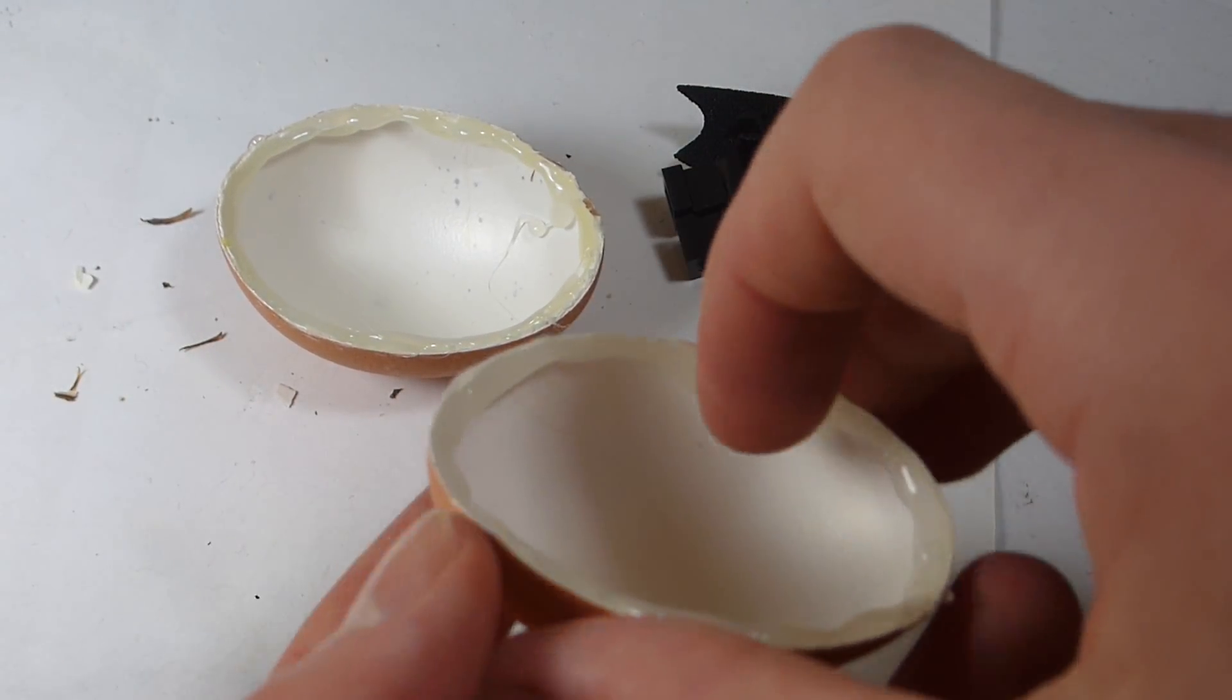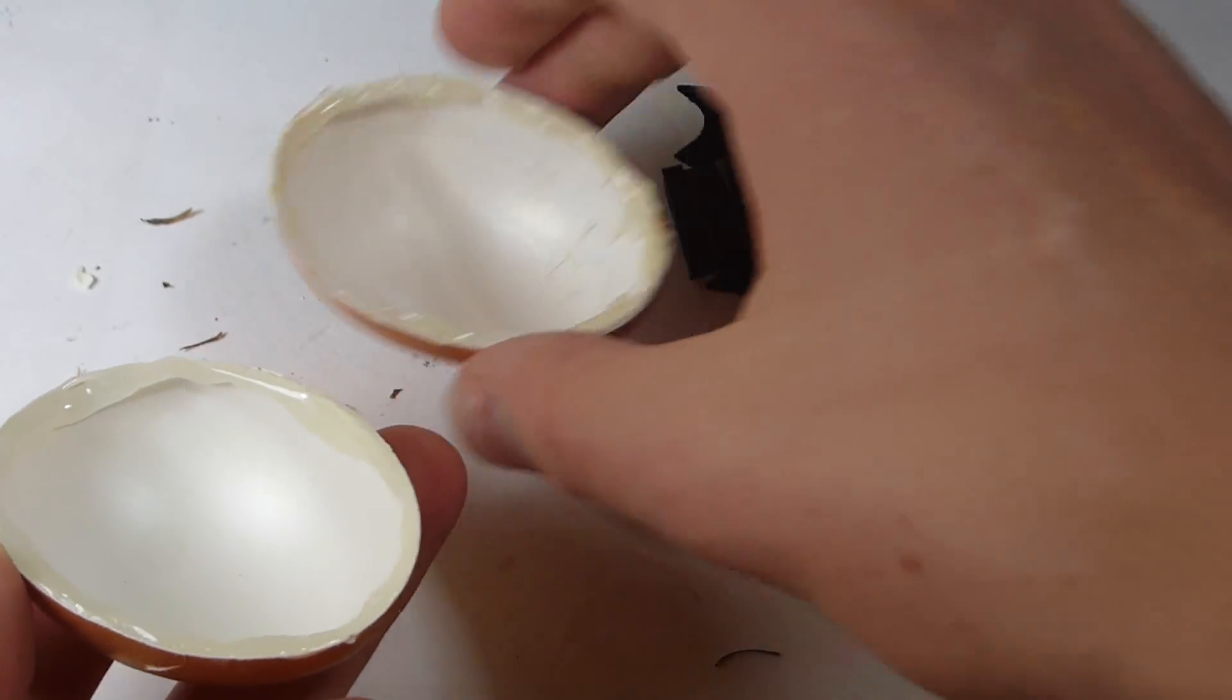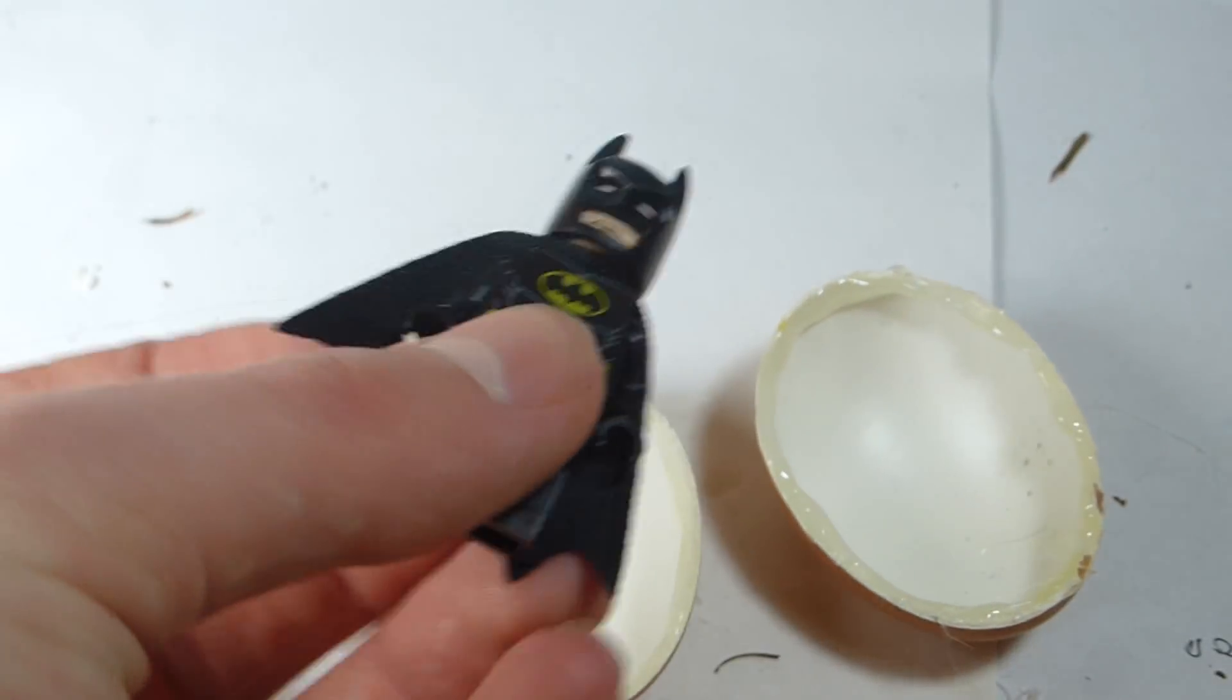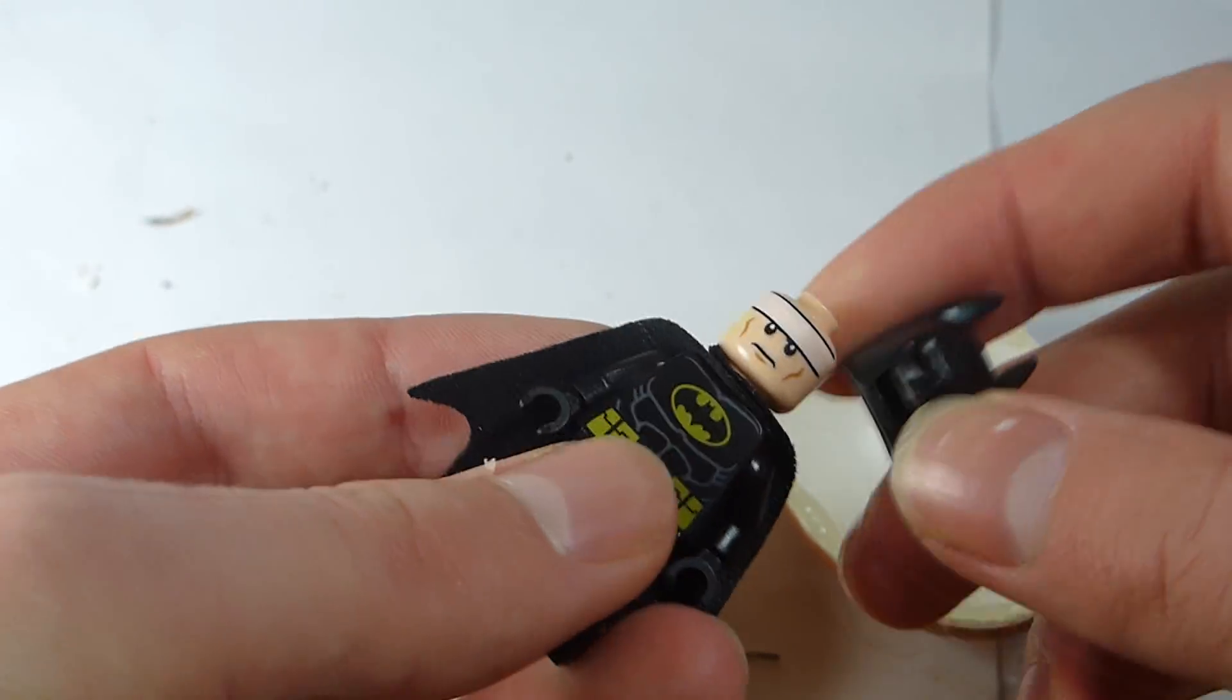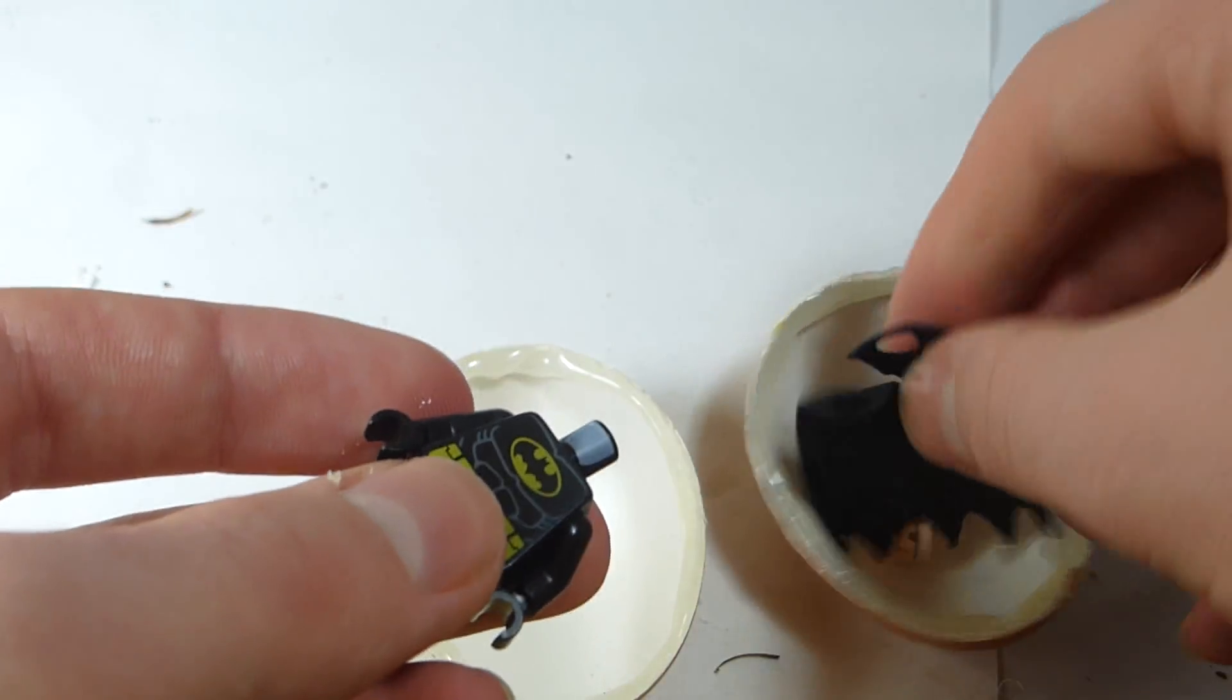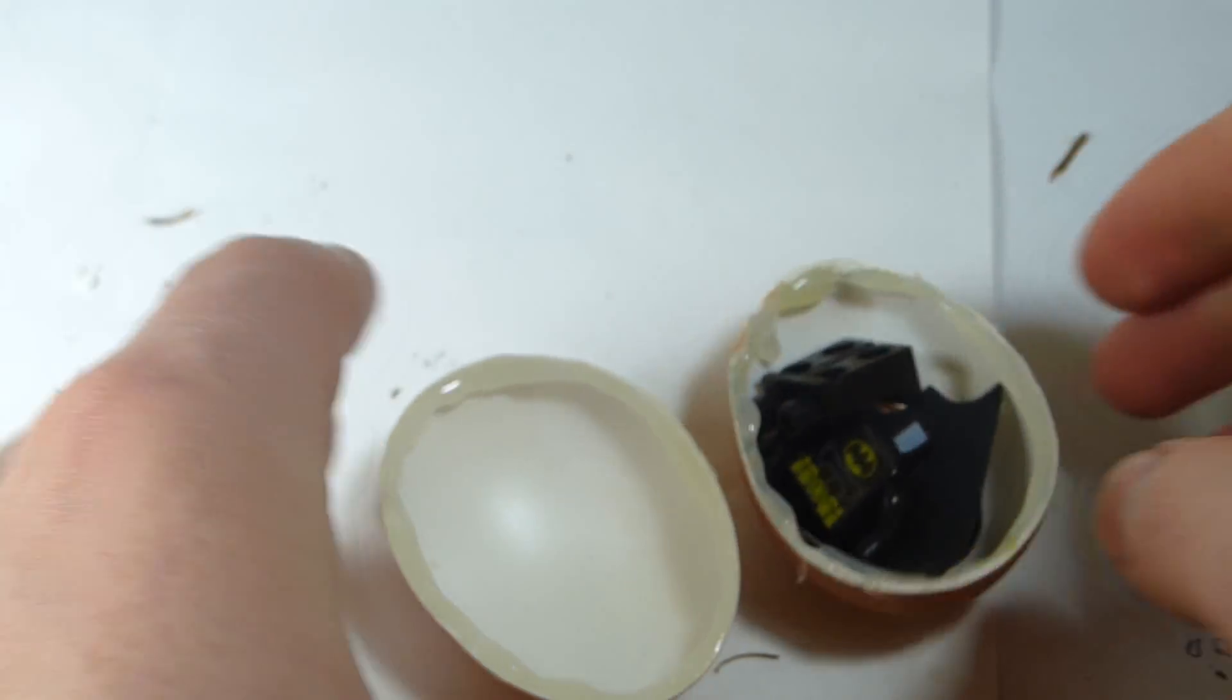All right, so once you have a ring of glue on the inside of each of your shells, what you're going to do next is take your minifigure that you want to put inside to give away to somebody. Break him up into some smaller pieces, just like that. Make sure he all fits inside of there.